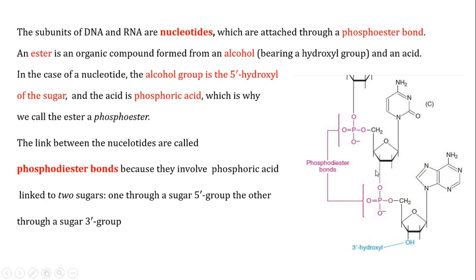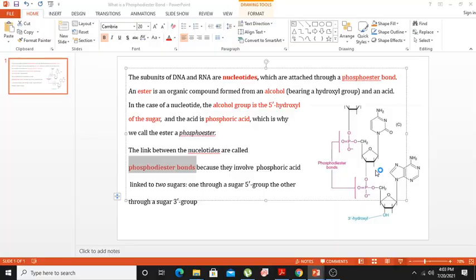This is called the phosphodiester bond because two phosphoester bonds are actually attaching the two nucleotides in DNA or RNA to each other. If you like the video, please subscribe to my channel, hit the like button, and share it with your friends.